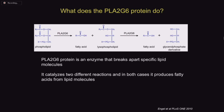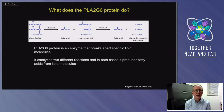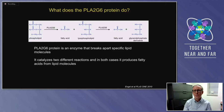What does the PLA2G6 protein do? How does it function? We've focused a fair amount of our effort on understanding that. The protein is an enzyme, and enzymes are important for a variety of different functions in cells and in the body. This enzyme functions to break apart specific lipid molecules. It catalyzes reactions that take a lipid molecule and convert it to a fatty acid plus another lipid molecule. These lipid molecules are important for energy production and the building and maintenance of membranes that surround each cell and compartments within the cell.